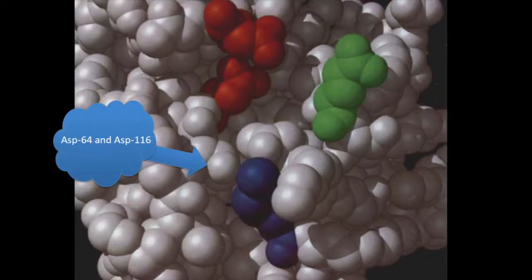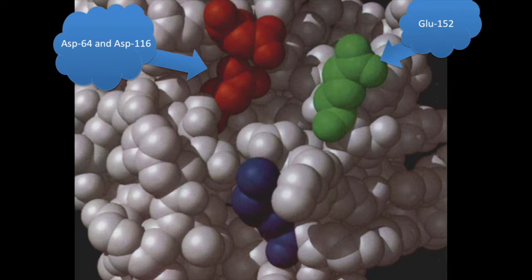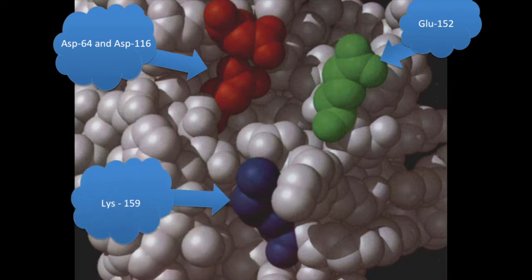Here is a close-up of the active site of HIV integrase. The red represents aspartate 64 and aspartate 116. The green represents glutamate 152. And the blue represents lysine 159.